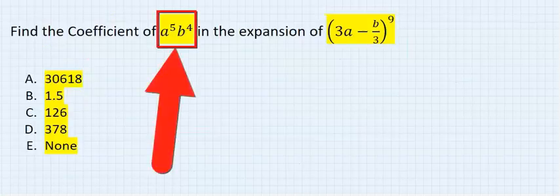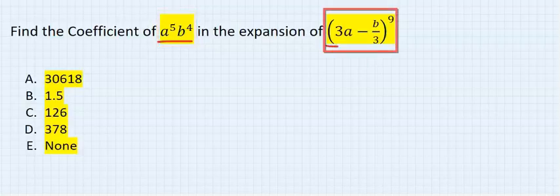Find the coefficient of a to the power of 5, b to the power of 4 in this expansion. Step number 1.